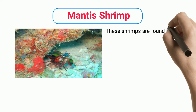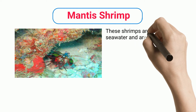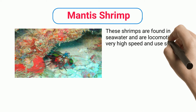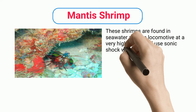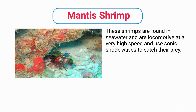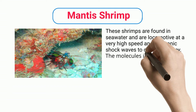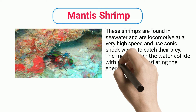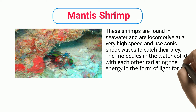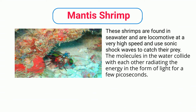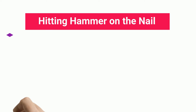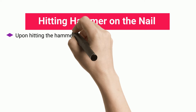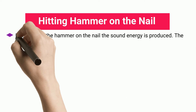Mantis shrimp: These shrimps are found in seawater and are locomotive at a very high speed, using sonic shock waves to catch their prey. The molecules in the water collide with each other, radiating energy in the form of light for a few picoseconds.